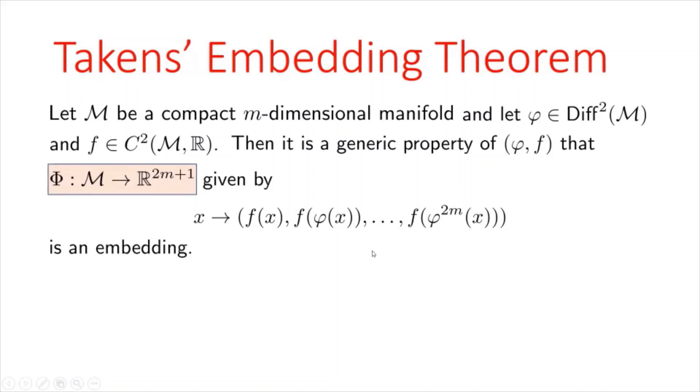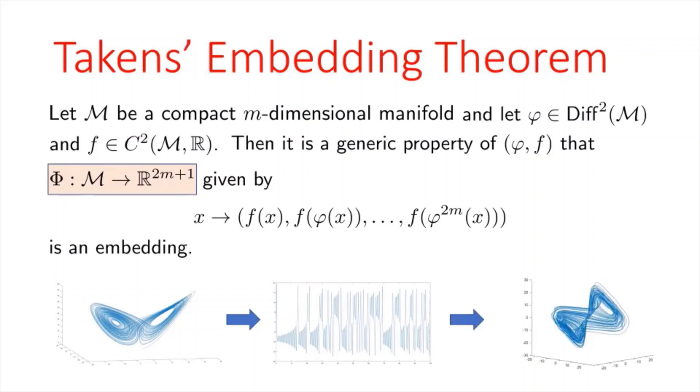So what this gives us is that if you do have a time series that has been observed from a trajectory in a dynamical system, using Takens' embedding, we can recover something homeomorphic to the original shape.